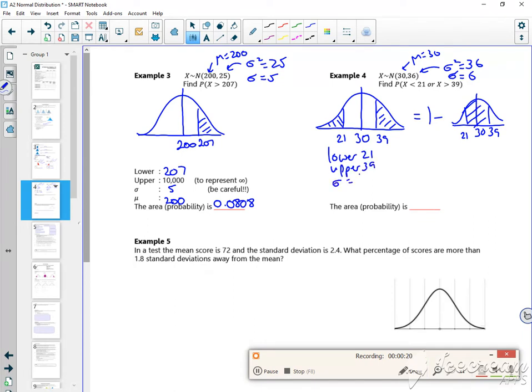my sigma to be 6, my mu to be 30, that would give me the probability that it's between 21 and 39.